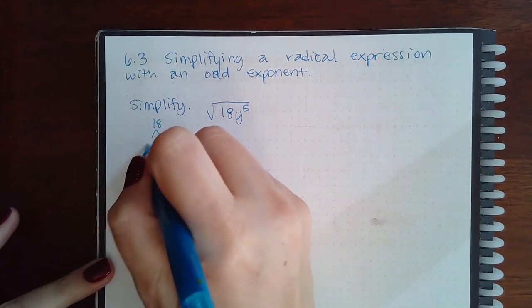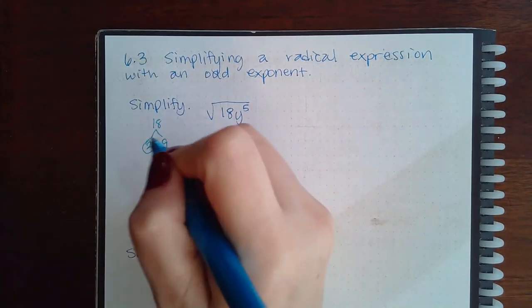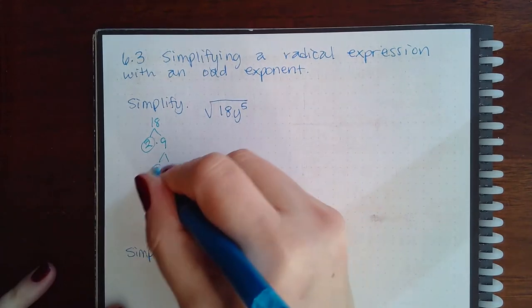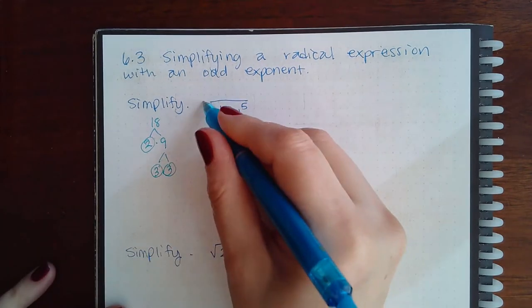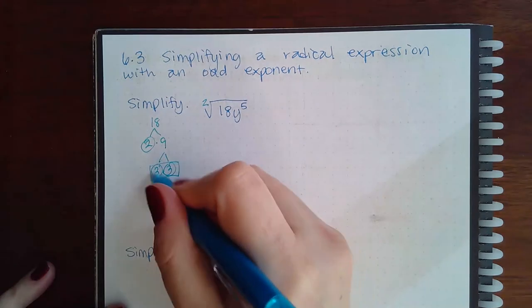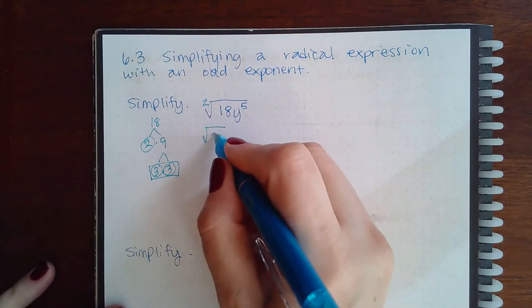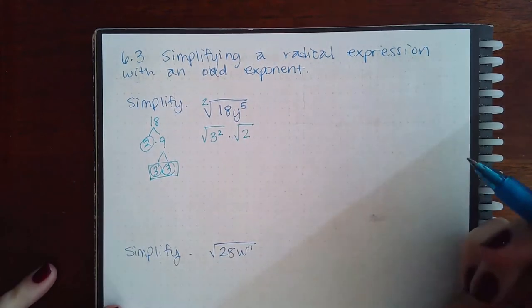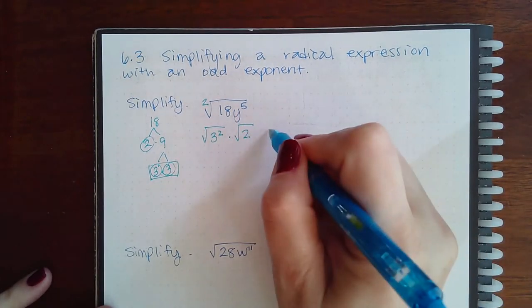So 18 is 2 times 9. 9 is 3 times 3. And because I'm doing a square root, I'm going to put the pair together in the front. So 3 squared. And then the leftover guy, the 2 in the back. For the variables, it's different.